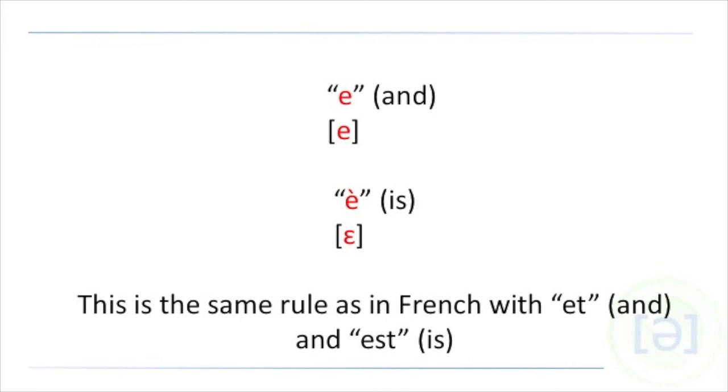The word E which is just the letter E in Italian meaning AND is always the closed lowercase E, as opposed to the word È the E with the accent grave which is an open epsilon E and this means IS. This same rule also applies in French. AND is always the closed lowercase E and IS is always the open epsilon. So this is finally one rule that we can use across languages.